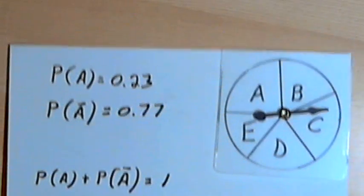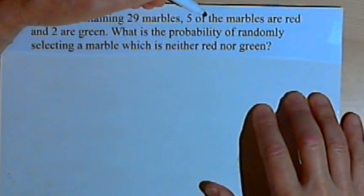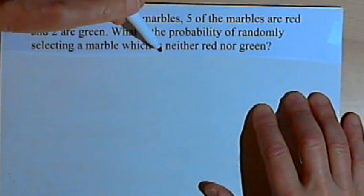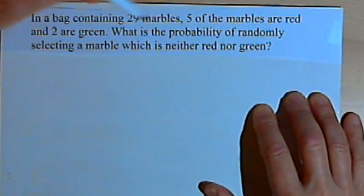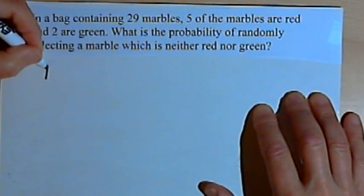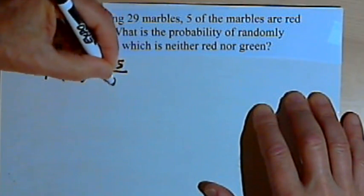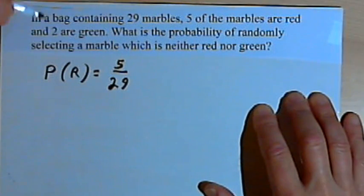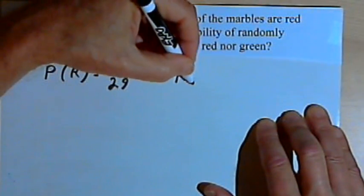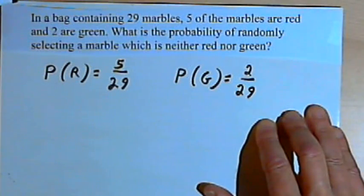Let's look at one more. In a bag containing 29 marbles, five are red and two are green. What is the probability of randomly selecting a marble which is neither red nor green? First, find the probability of red: P(R) = 5/29, since there are five red marbles out of 29 total. The probability of green is 2/29, since there are only two green marbles out of 29.